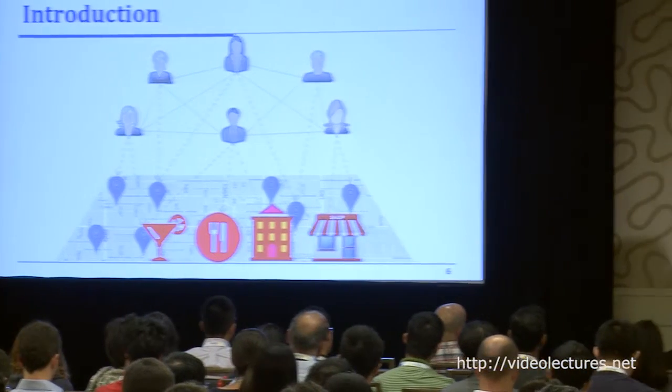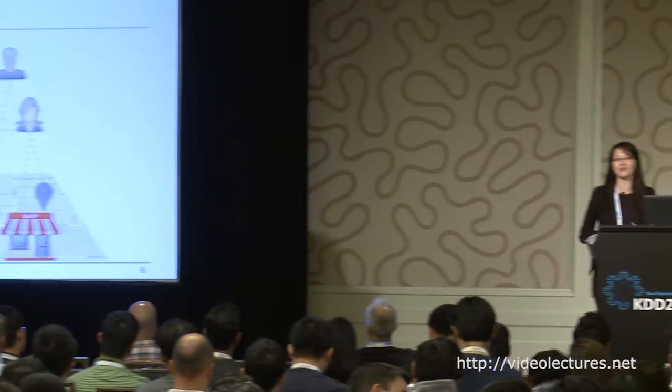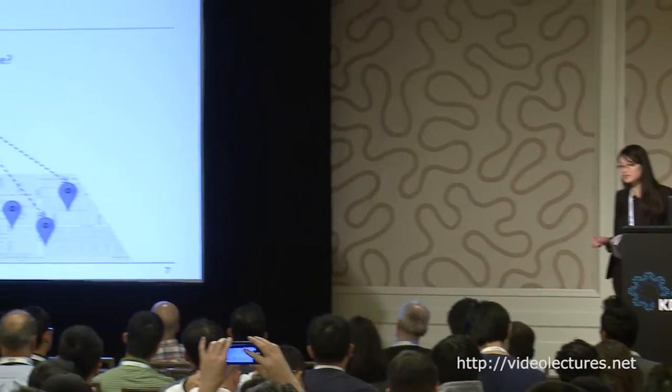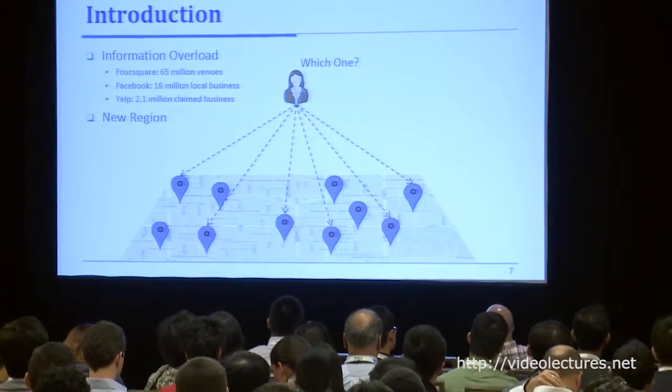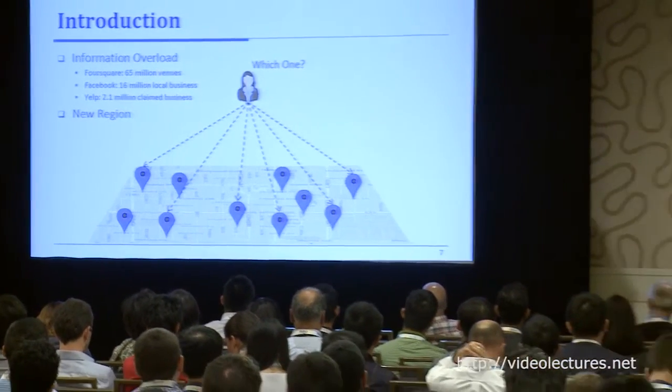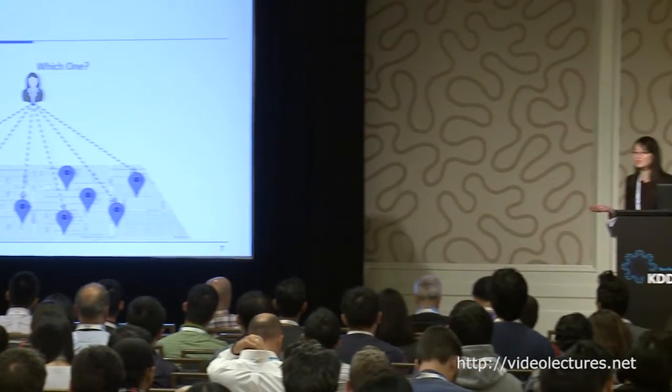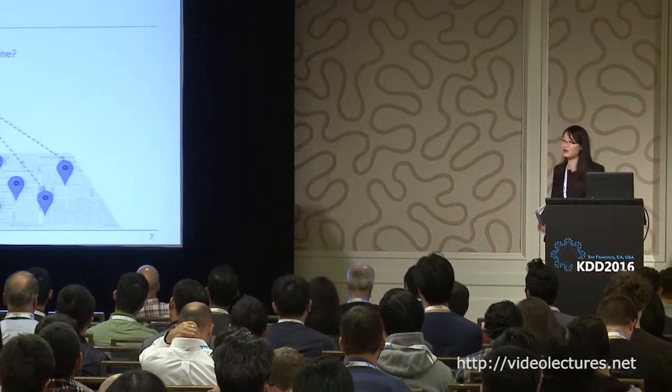The check-in is a process whereby people can announce their arrival at a particular location on a social service. Although location-based social network is very popular, it is still very challenging for users to choose some location to visit. First, it is mainly because of information overload. For instance, Foursquare has over 65 million values.